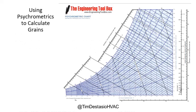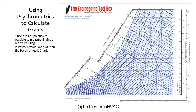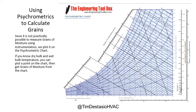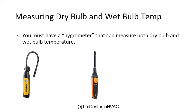To calculate the grains of moisture difference, we go to the psychrometric chart or use a psychrometric app. The psychrometric chart is useful because we can plot points that represent the properties of air. It's not practically possible to measure grains of moisture using instrumentation directly, so we plot it on the psychrometric chart. If we know our dry bulb and wet bulb temperature, we can plot a point and get our grains of moisture. An instrument that can measure both dry bulb and wet bulb temperature is called a hygrometer.